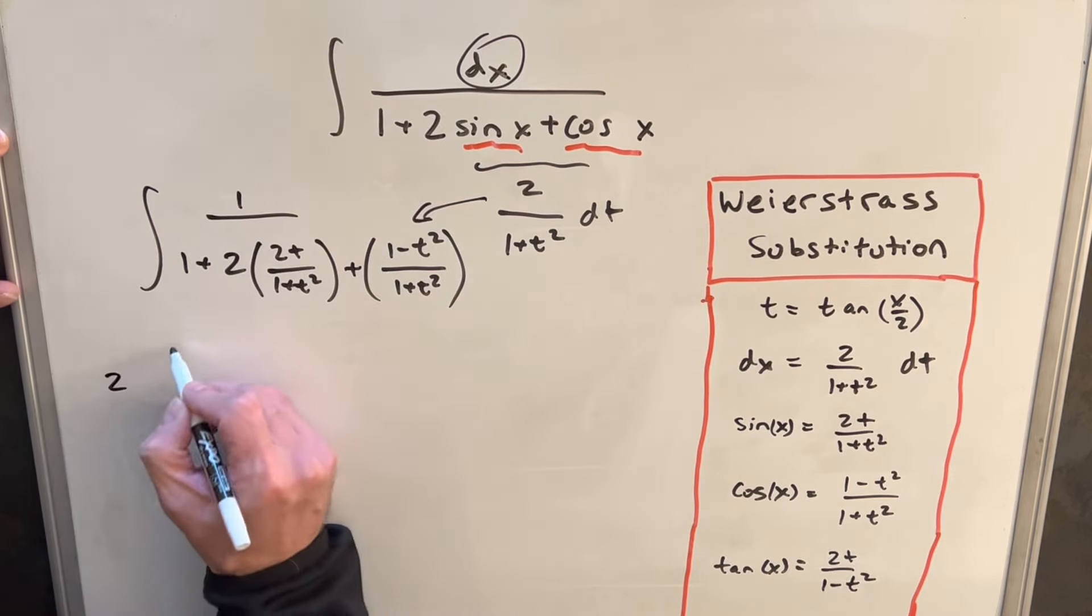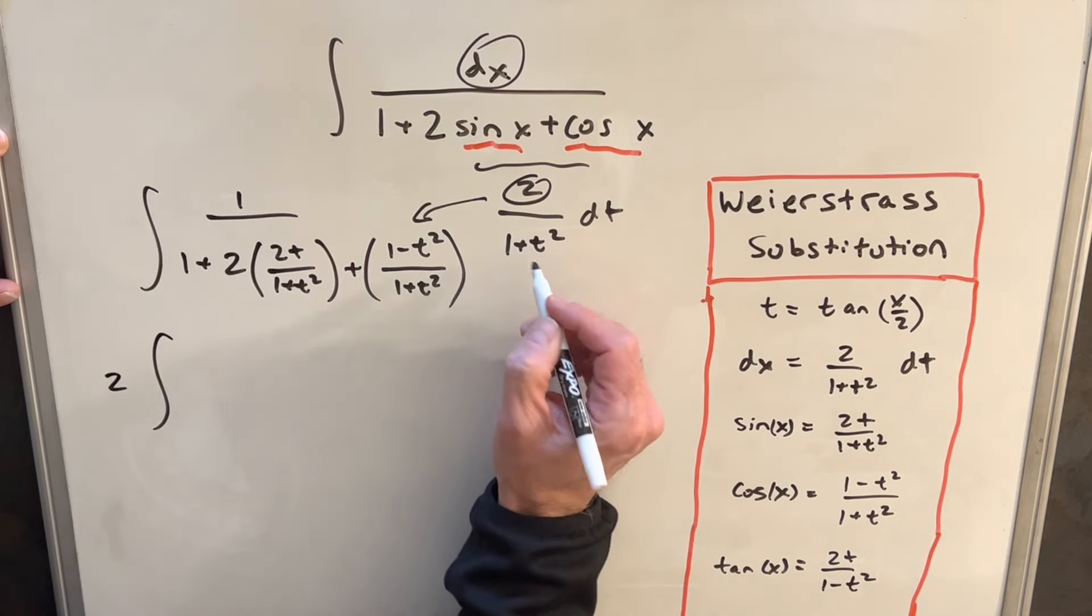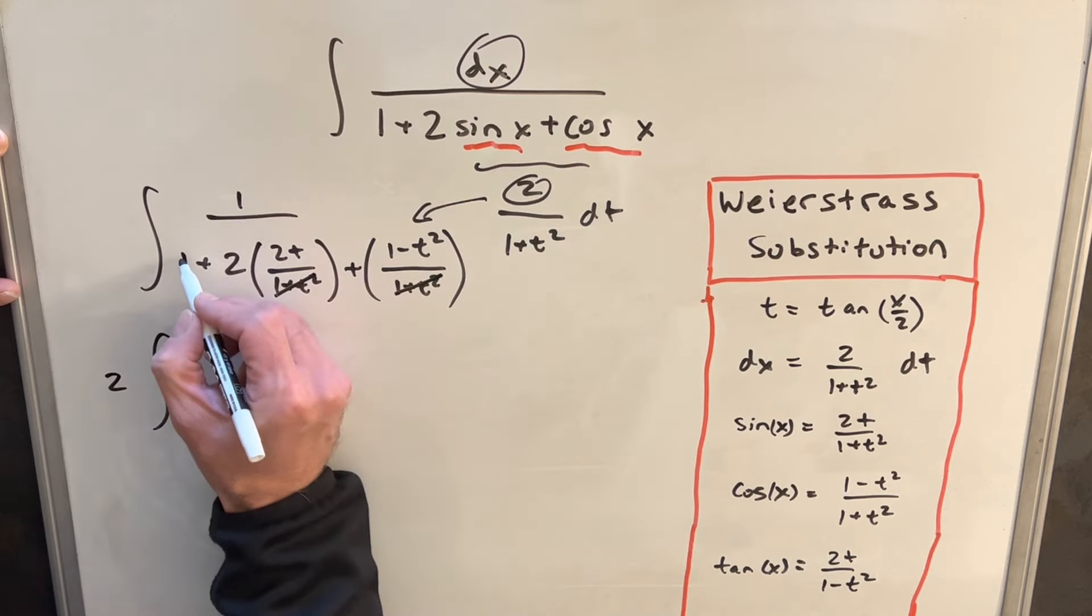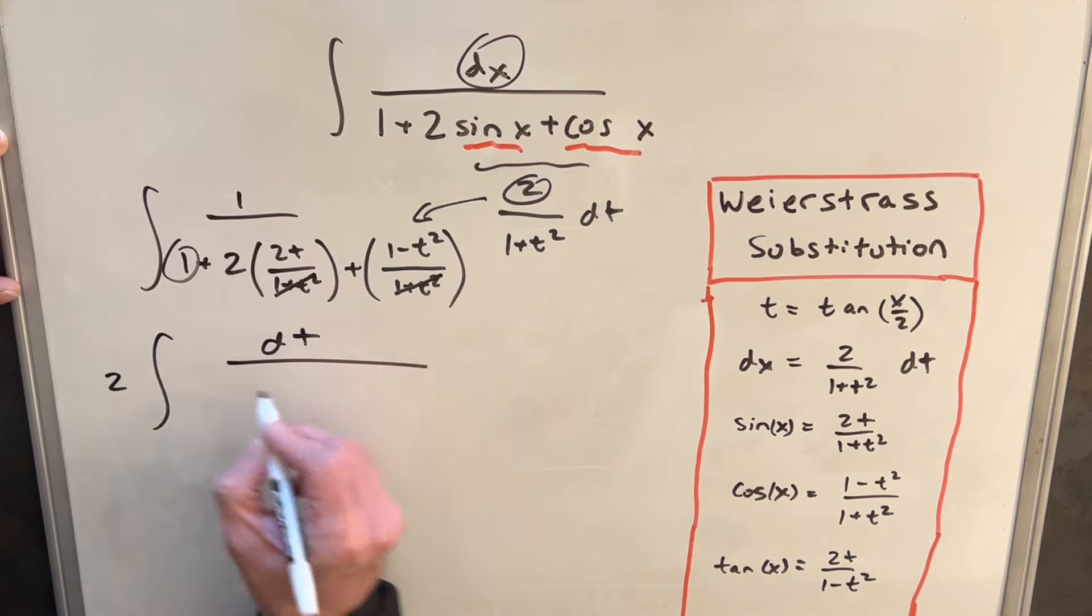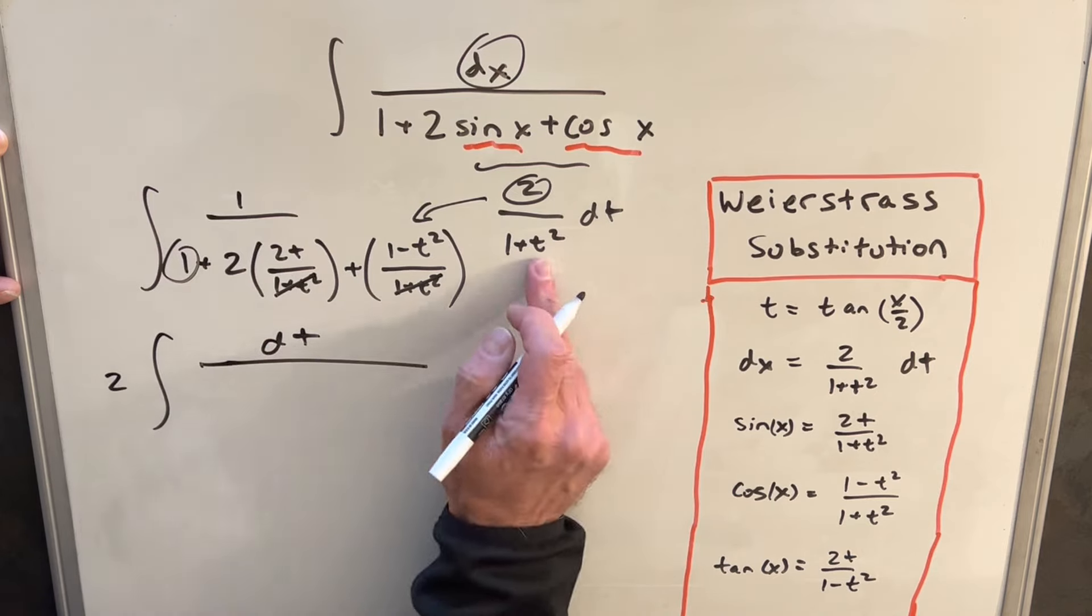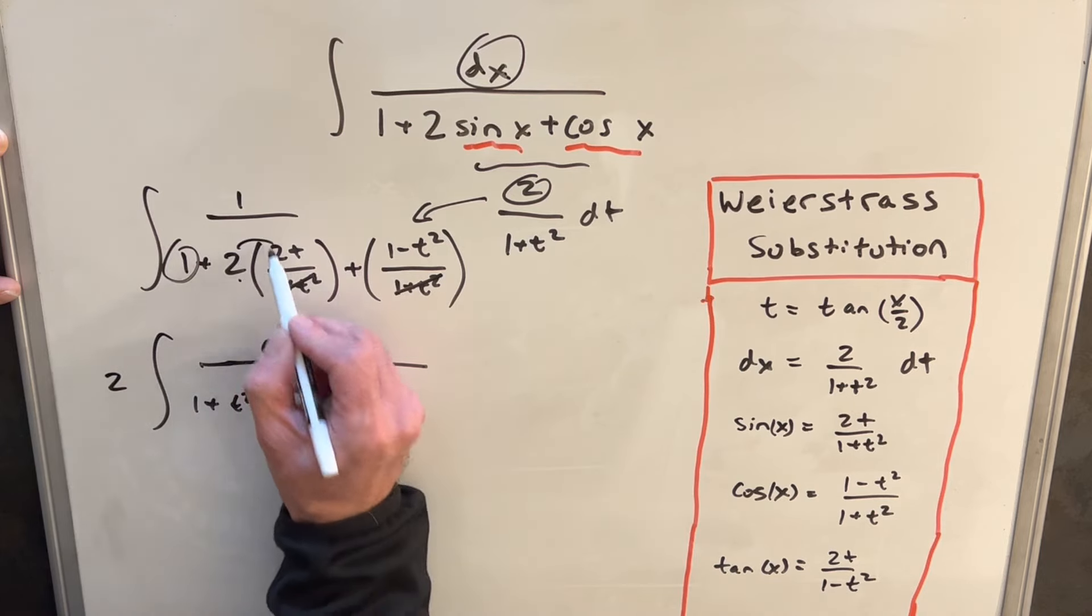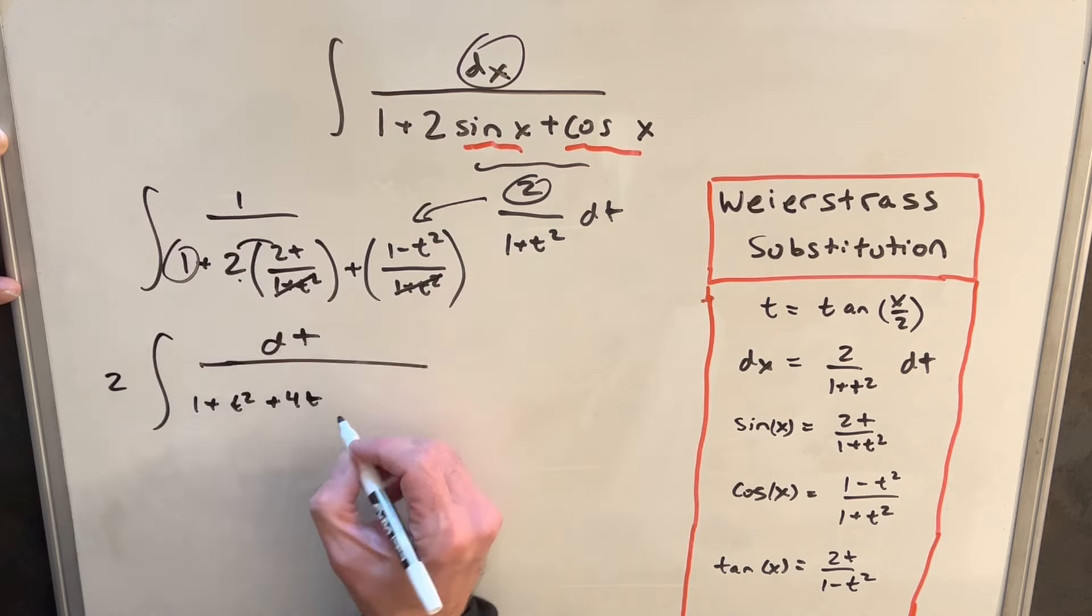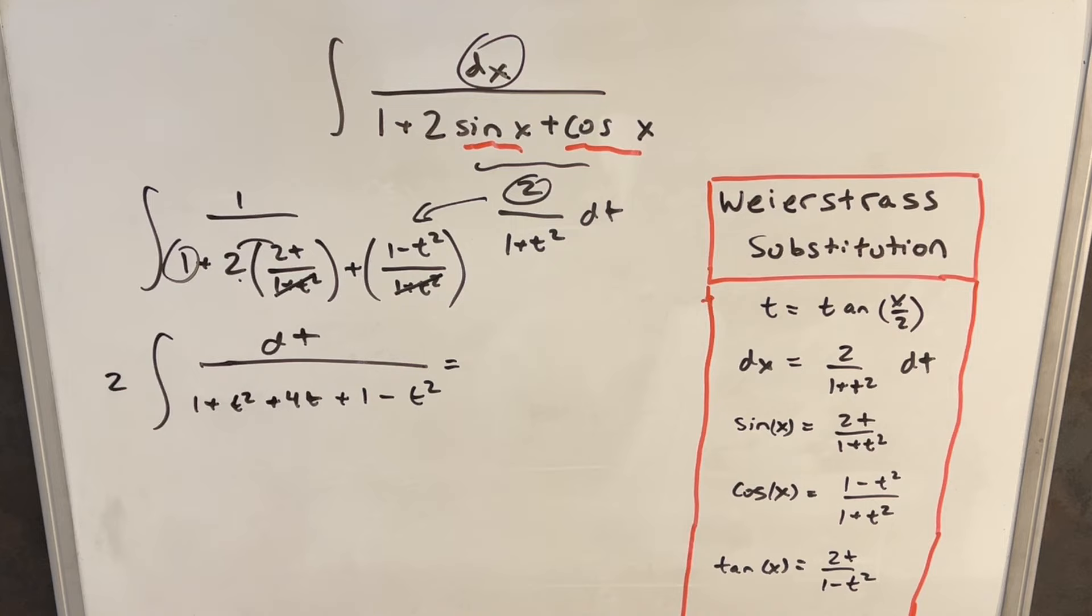So we'll take our 2 out front from here. And then when we multiply this 1 plus t squared, we're going to have a bunch of, it's going to cancel here and here. We just don't want to forget about this 1 here. So let's try to put this all together. We'll have a dt in the numerator. Then we're going to have 1 plus t squared. This piece is just going to be 4t. And then here with this canceled, we're just going to have plus 1 minus t squared.